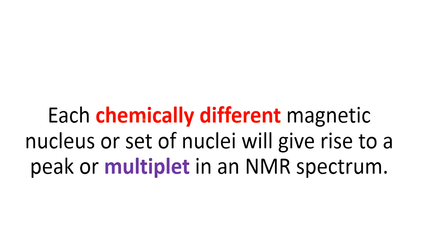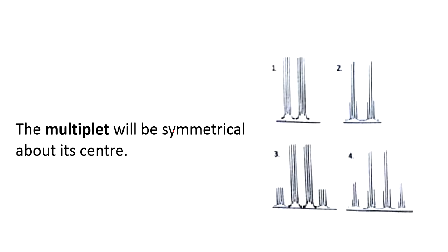Each chemically different magnetic nucleus or set of nuclei will give rise to a multiplet. The multiplet is given by each of the chemically different groups. This multiplet will be symmetrical most of the time — symmetrical about its center. As you can see in the options, these multiplets are symmetrical about the center.